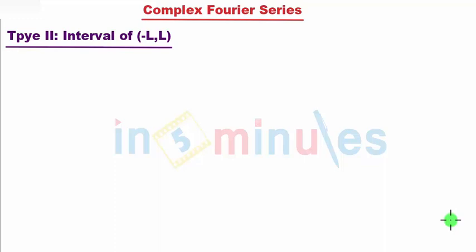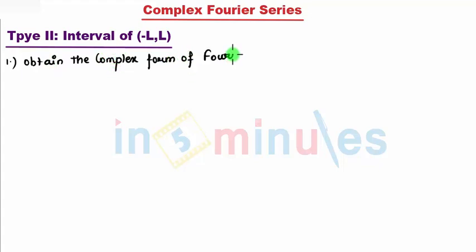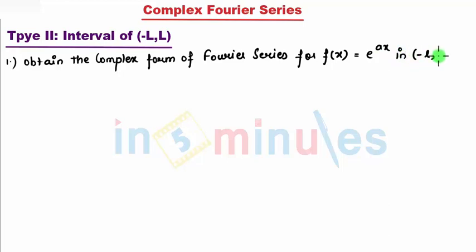Hello students, welcome. In 5 minutes we'll start with Type 2 sums, that is the interval from minus L to L. The fantastic thing is only the interval will be changing, but the sum is the same as we took from minus pi to pi. So I need to obtain the complex form of Fourier series for f(x) = e^(ax) on the interval minus L to L. The function is the same, I'm just changing the limits.